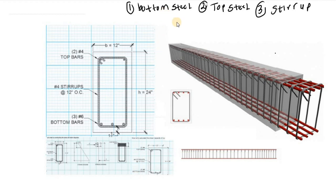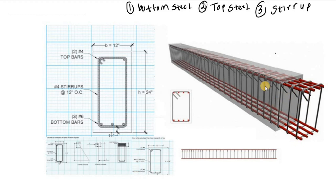The bottom steel is the main steel. The top steel is what we know as the anchor bar or anchor steel. The stirrup is what we also know as the transverse bar. Now, looking at this 3D picture, we have a red steel bar at the bottom — that is the bottom steel. At the top part, we have the top steel. And the transverse steel bar connecting the top bar to the bottom bar — these are what we know as stirrups.